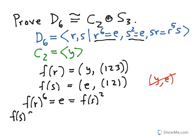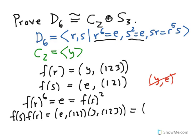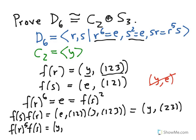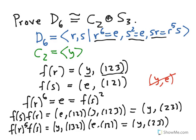So let's consider F(S) times F(R). So that's going to equal (E, (1, 2)) times (Y, (1, 2, 3)). And it's not hard to check that this is equal to (Y, (2, 3)). Alright, now we'll check the other direction. F(R) to the 5th times F(S). Now, F(R) was Y and then (1, 2, 3). If you raise the Y to the 5th, you'll just get back Y. And (1, 2, 3) is order 2. If you raise it to the 5th, you'll get (1, 2, 3) squared, which is (1, 3, 2). And then the F(S) is still (E, (1, 2)). And again, it's very easy to check. The product here is going to be (Y, (2, 3)). And so this tells us that our choices for F(R) and F(S) are satisfying all three relations.